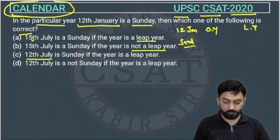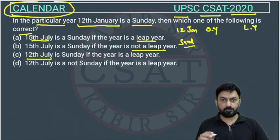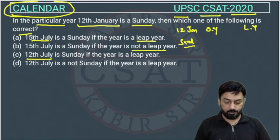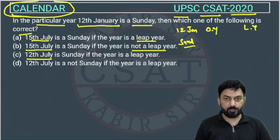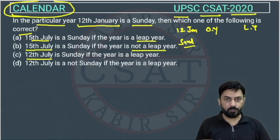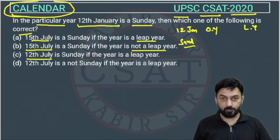We will consider for 12th July, because if we know 12th July, we can compute 15th July easily. We could also start from 15th July and backtrack to 12th July — both are possible — but I am working with 12th July. So, suppose this is an ordinary year.